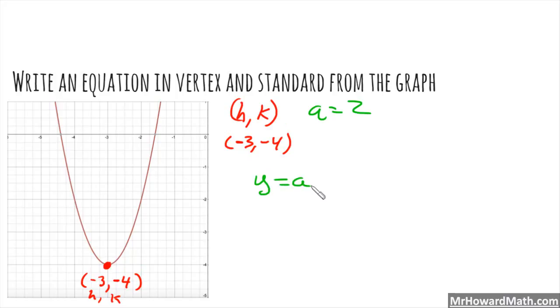So our form for vertex form is this. So we fill in the information. We know that a is positive 2. We know that h is negative 3, so I need a plus 3 right here. k is negative 4, so I write exactly negative 4 there. So that is standard form. Now we need vertex, that is vertex form.